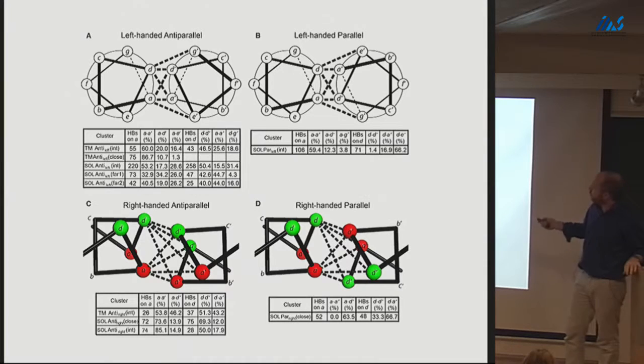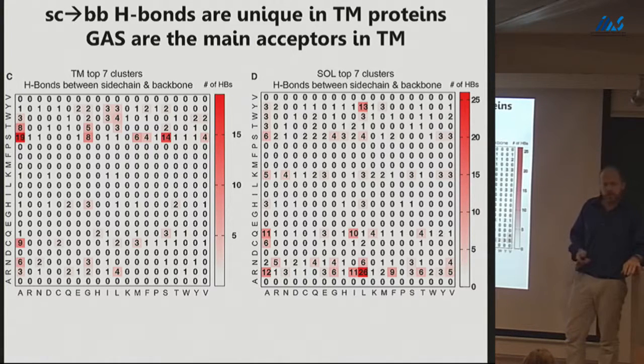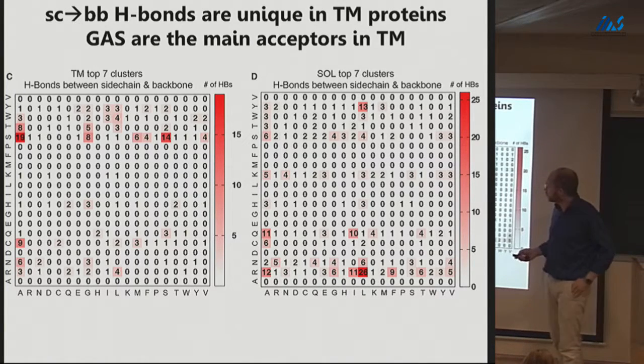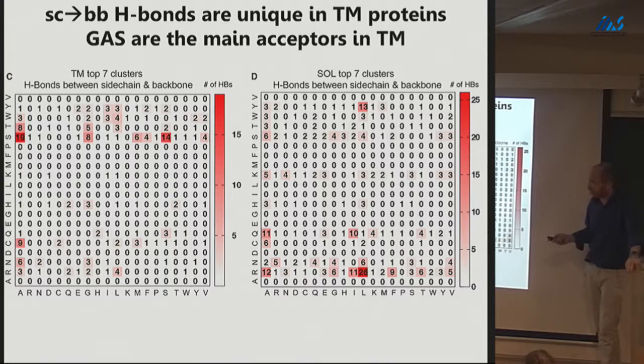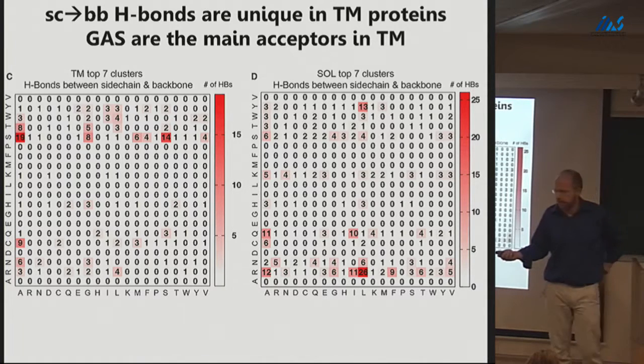You can, of course, characterize the interaction pattern and the H-bonding and so on. I don't have time to dwell into all these details. One thing which is important is that in the transmembrane proteome, the small amino acids, alanine, glycine, and serine are important in receiving backbone carbonyl H-bonds, but the numbers here are not big. You have an average in each helix one such bond, but this is an important bond.